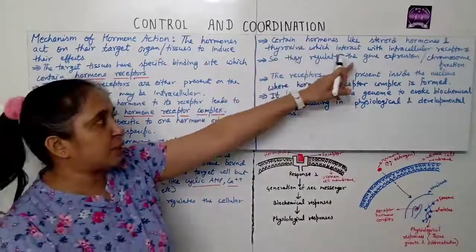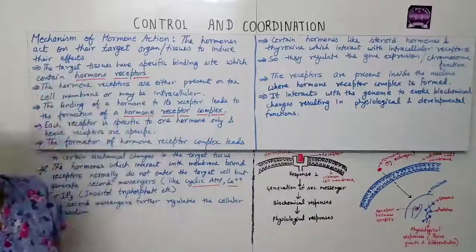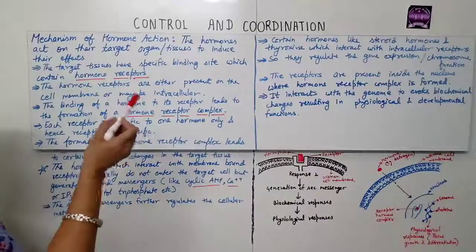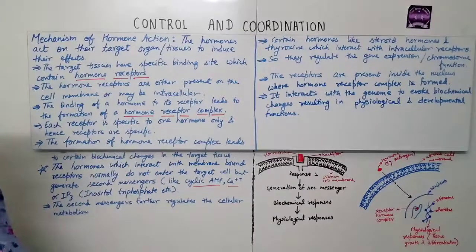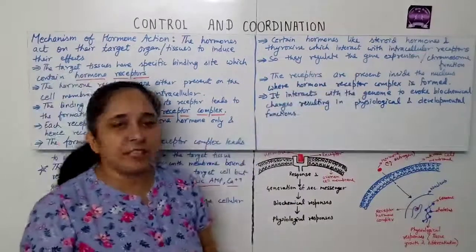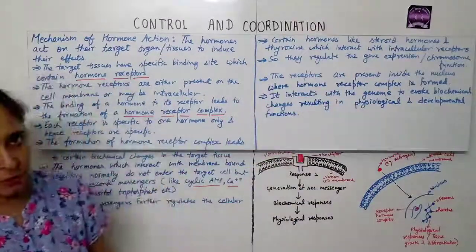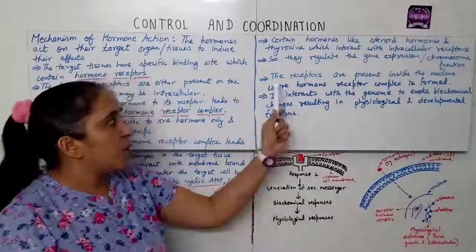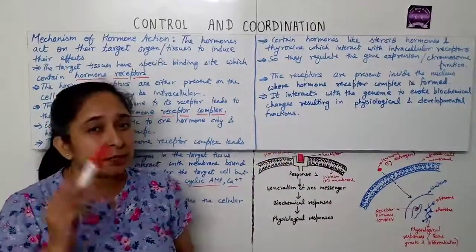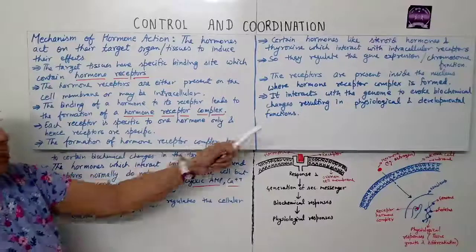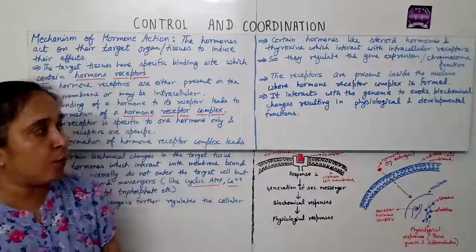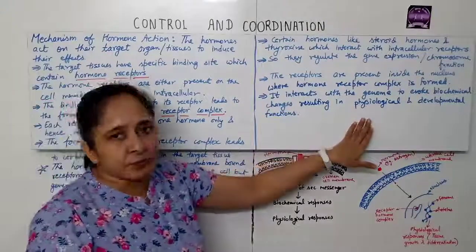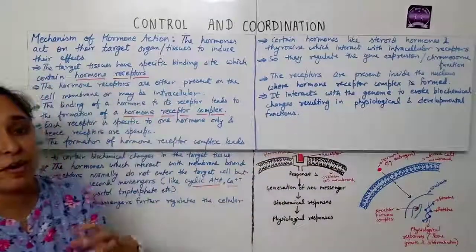Certain hormones like steroid hormones and thyroxine interact with intracellular receptors. They regulate gene expression and chromosome functions. The receptors are present inside the nucleus where the hormone-receptor complex is formed, and it interacts with the genome to evoke biochemical changes resulting in physiological and developmental functions.